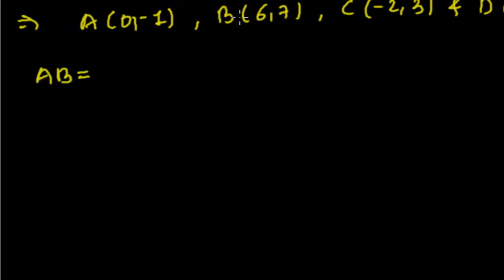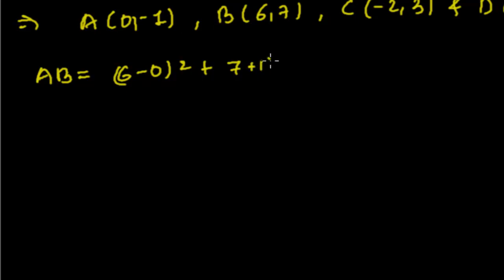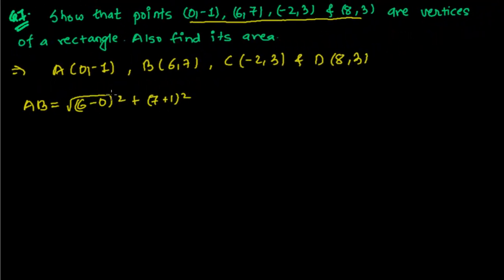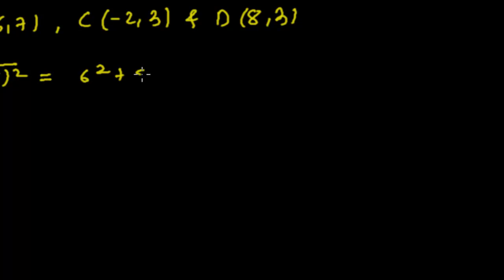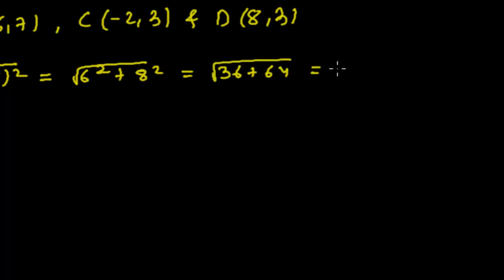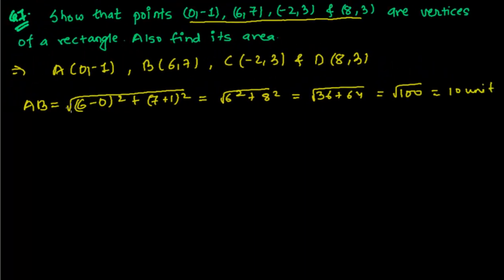Let me first find out AB. The distance of AB is: difference of x-coordinates = (6 - 0), squared, plus difference of y-coordinates = (7 - (-1)) = 8, squared — all under a root. So it's √(6² + 8²) = √(36 + 64) = √100 = 10 units. We got AB = 10 units.